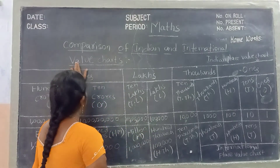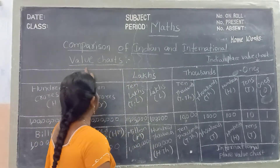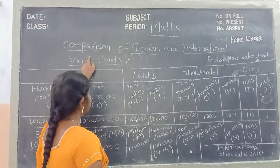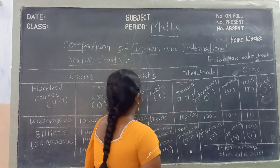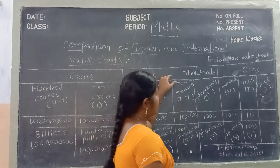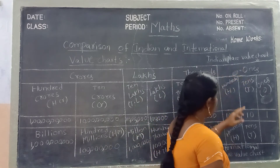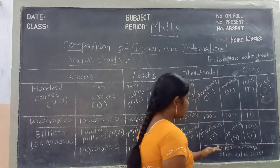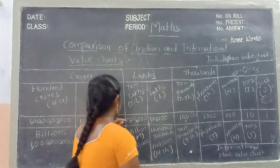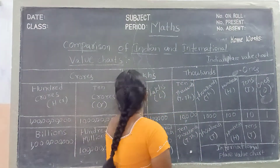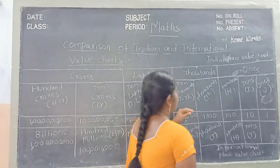Okay children, next topic is comparison of Indian and international place value chart. Comparison of Indian and international place value chart. See children: the upper part is the Indian place value chart, and the lower part is the international place value chart. What is the variation between Indian and international place value chart?